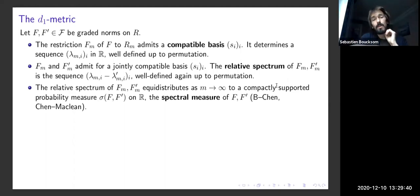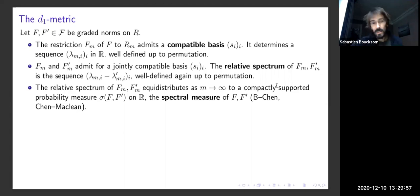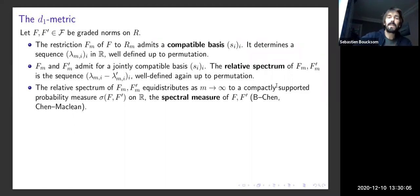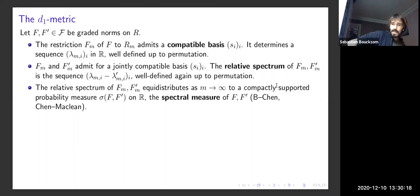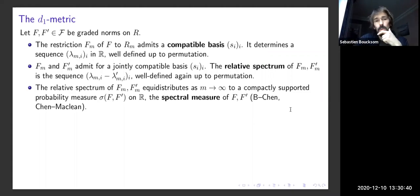With a jointly compatible basis for both filtrations, you have the values λ_{m,i} and λ'_{m,i} from each, and you take their differences to get the relative spectrum of the two filtrations. This sequence, ordered decreasingly, is characterized by a min-max formula exactly as for quadratic forms, and in particular is independent of the choice of jointly compatible basis. Going back to Chen and Macklin, for filtrations Fm on each graded piece Rm, the relative spectra as M → ∞ distribute and converge to a compactly supported probability measure on ℝ encoding the asymptotic behavior.